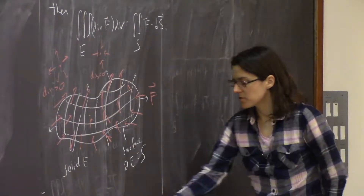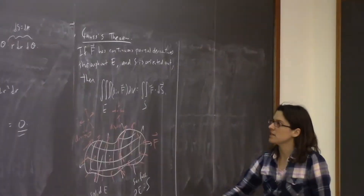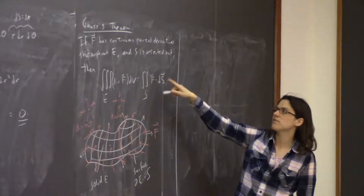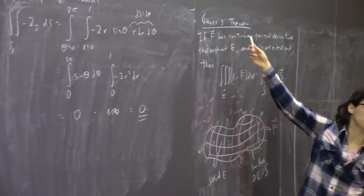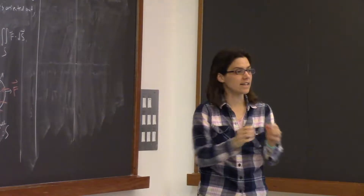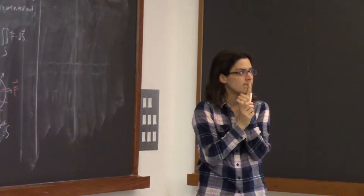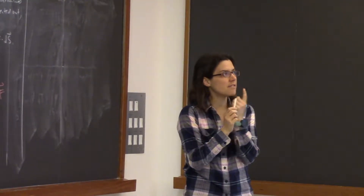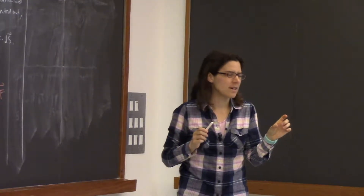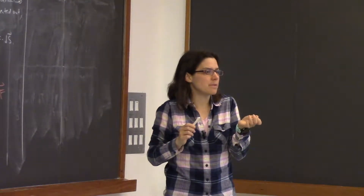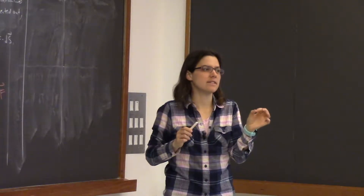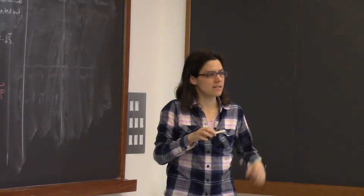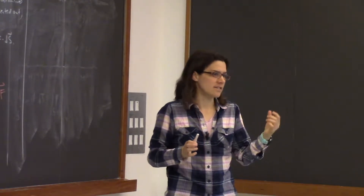Again, it's another generalization of the fundamental theorem of calculus: you can integrate derivatives on some region, and it's the same as integrating the original function on the boundary. If the vector field doesn't have continuous partial derivatives, you have a problem. But if the solid has a cusp, the problem areas would be on a set of measure zero and wouldn't contribute much to the integral.